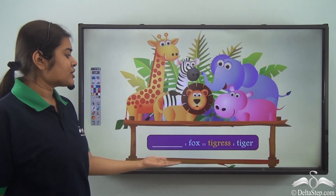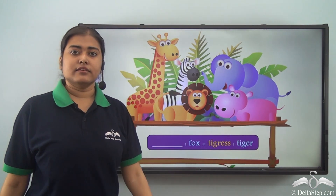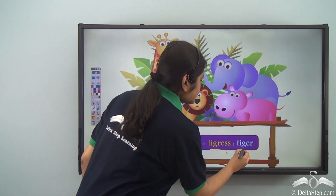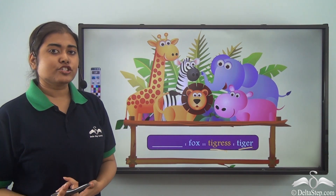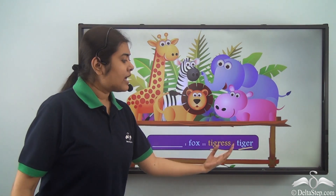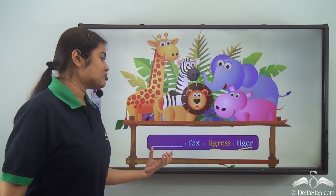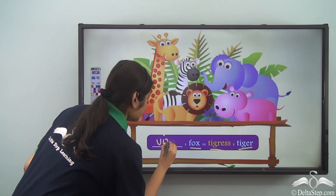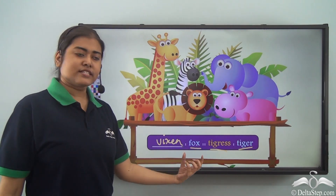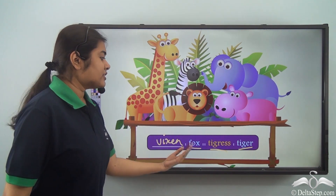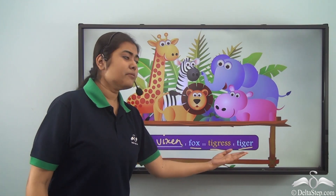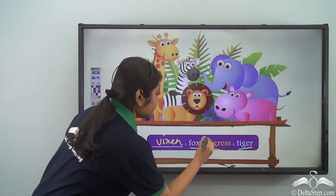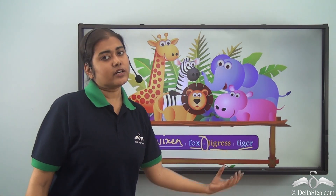Dash is to Fox as Tigress is to Tiger. The second relationship is given — tigress and tiger show a relationship of gender. Tigress is the feminine gender and Tiger is the masculine gender. Similarly, we need the feminine gender of Fox in the blank, which is Vixen. So: Vixen is to Fox as Tigress is to Tiger. On the left we have the feminine gender and on the right the masculine gender. The relationship on one side of the equivalence must match the relationship on the other side.